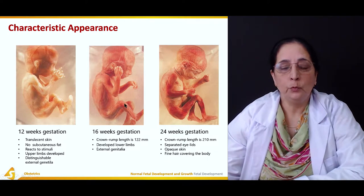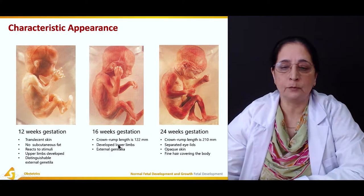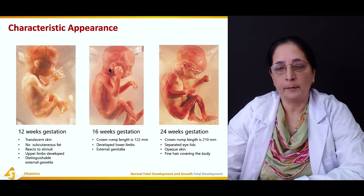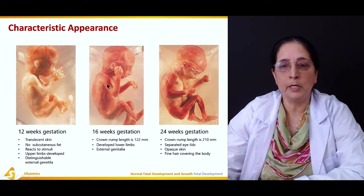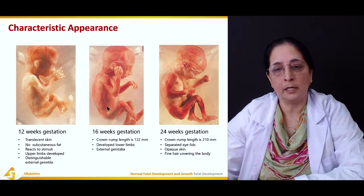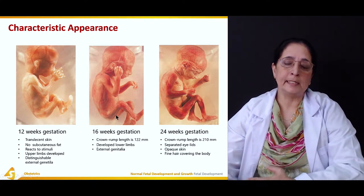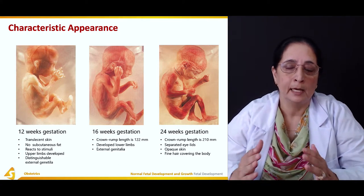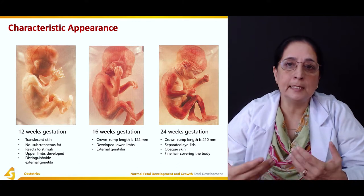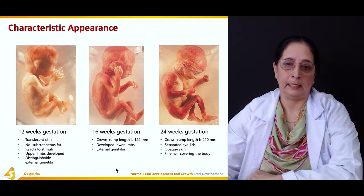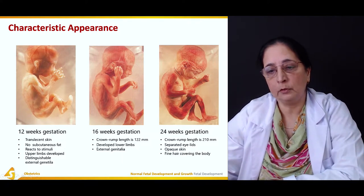At 16 weeks gestation, the crown-rump length (measured from the head or crown to the buttocks or rump) is about 122 millimeters. The lower limbs are now developed, and external genitalia are also visible. This is typically when ultrasound is performed — roughly between 16 to 20 weeks — when it is easy to determine the sex of the baby.